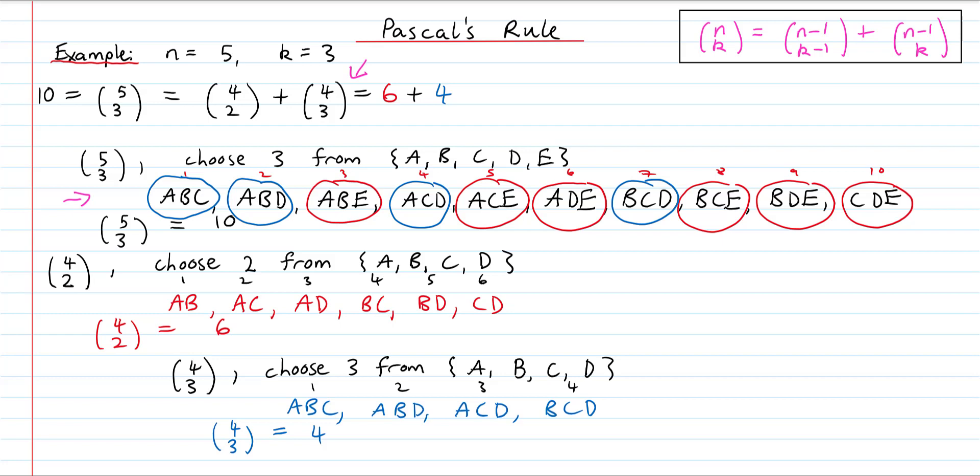In our equation, the right hand side is 6 plus 4. If we look at all the groups that contain E and cross out the E, we're left with exactly the same 6 groups from our 4 choose 2 list. The reason is: if we want to choose 3 things from A, B, C, D, E and we've decided E must be included, then we've already got 1 element. So we have 2 things left to choose from 4 remaining elements — A, B, C, D — giving 4 choose 2 ways.